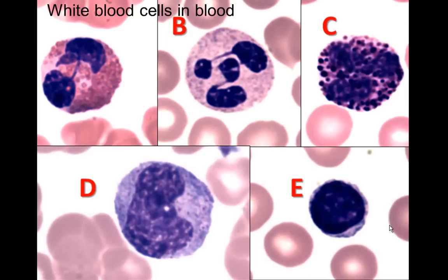Looking at white blood cells in actual human blood, we see the eosinophil with its big eosinophilic granules. In contrast, the basophil has granules that impede our view of the nucleus — it does have a lobulated nucleus and large blue granules. A neutrophil also has a lobulated nucleus but its granules are much smaller than those of the eosinophil or basophil.